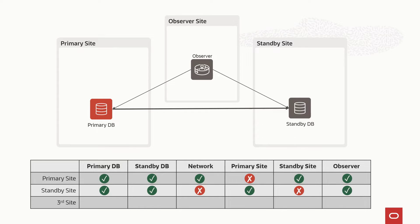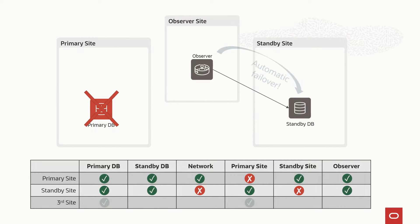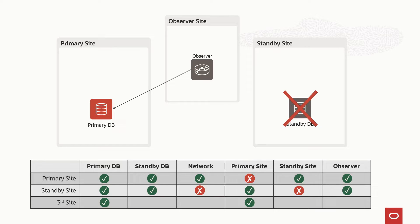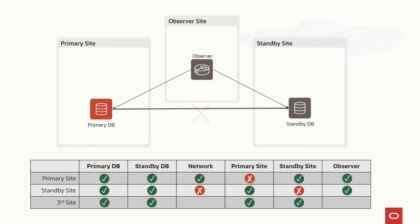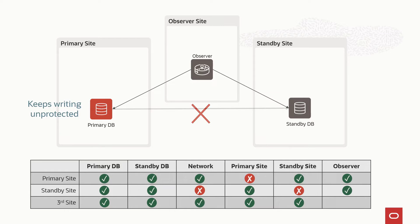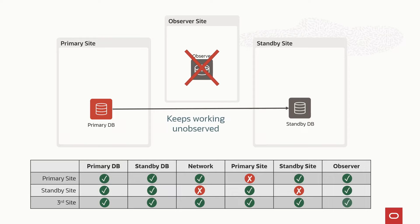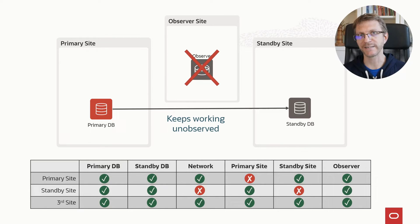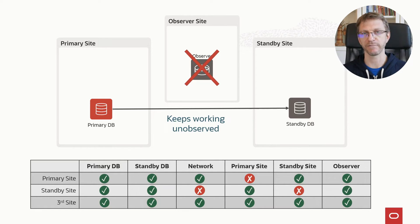Now let's see what happens if I put the observer on the third site — this is the Oracle recommendation. If I lose the primary database or the full primary site, I will have an automatic failover. If I lose the standby database or the full standby site, the primary will keep working because it still has connectivity with the observer. If I lose the network between the primary and the standby site, the primary will keep writing without protection. And if I lose the observer, the primary and standby still have connectivity and the configuration keeps working. Putting the observer on the third site is the best solution — it gives the best protection against different failure scenarios.